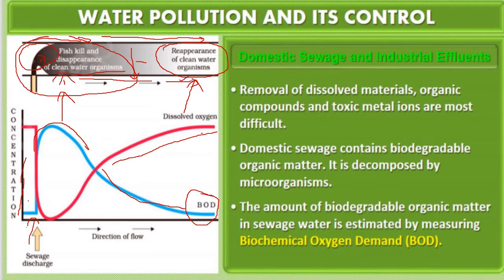When the water becomes clear, organisms will reappear because the blue line - BOD demand - decreases, whereas DO, dissolved oxygen, increases. When dissolved oxygen increases, organisms will survive. When BOD increases, organisms die - without oxygen, organisms die. When the water becomes clear and dissolved oxygen increases, organisms will come back alive. So here they die, and here they are living again. BOD is an index to tell the rate of water pollution in a water body.